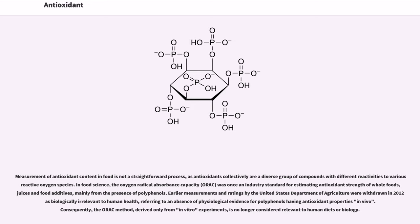Measurement of antioxidant content in food is not a straightforward process, as antioxidants collectively are a diverse group of compounds with different reactivities to various reactive oxygen species. In food science, the Oxygen Radical Absorbance Capacity (ORAC) was once an industry standard for estimating antioxidant strength of whole foods, juices and food additives, mainly from the presence of polyphenols. Earlier measurements and ratings by the United States Department of Agriculture were withdrawn in 2012 as biologically irrelevant to human health, referring to an absence of physiological evidence for polyphenols having antioxidant properties in vivo. Consequently, the ORAC method, derived only from in vitro experiments, is no longer considered relevant to human diets or biology.